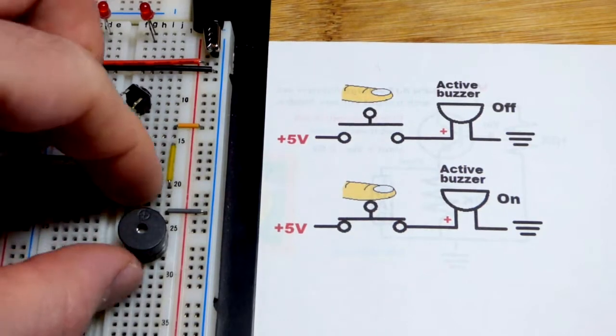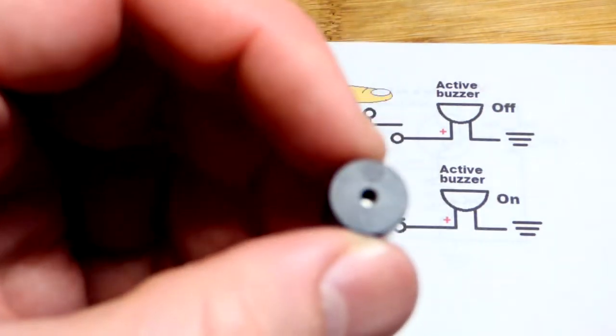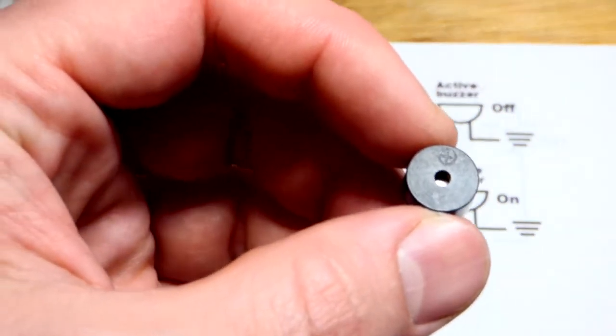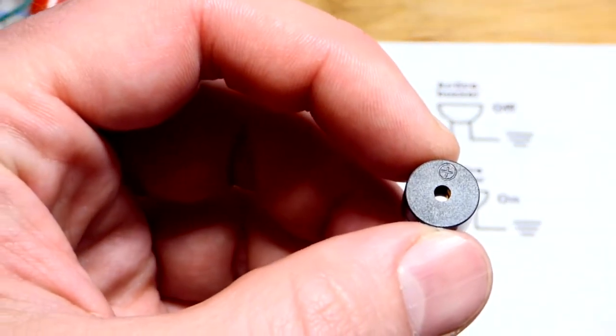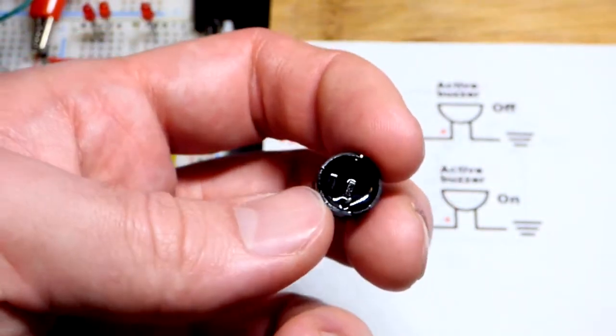In this video, we're going to take a quick look at the active buzzer. The active buzzer is polarized, and one thing about it is we can connect it directly to a power supply, five volts to be exact.